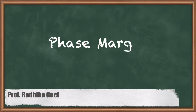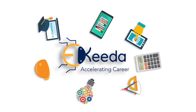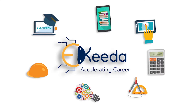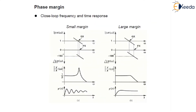Hello everyone. In this lecture we will study about phase margin. We have already seen in the previous lecture the key statement for stability and frequency compensation: to ensure stability, the magnitude of the loop gain βH must drop to unity before the phase angle of βH crosses minus 180 degrees.